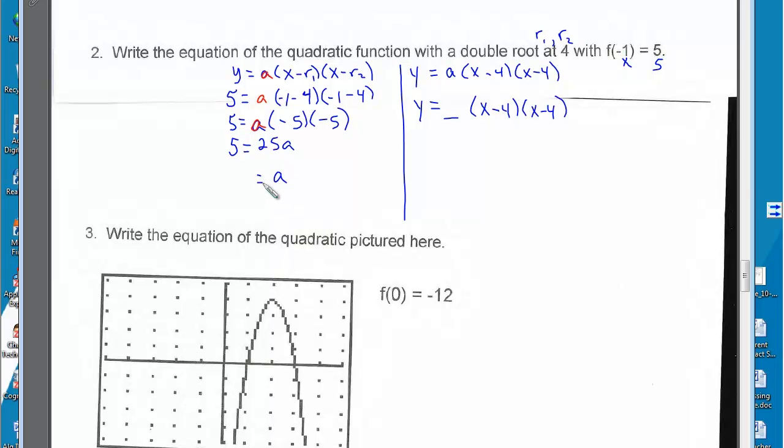Divide both sides by 25 and we get a is equal to 5 over 25, which is simplified or reduces down to 1 fifth. So a is equal to 1 fifth. y equals 1 fifth times x minus 4 times x minus 4.